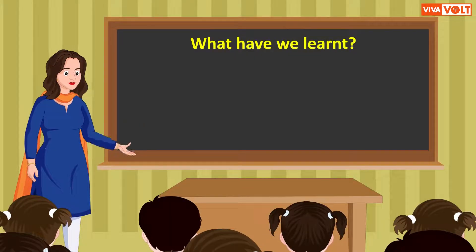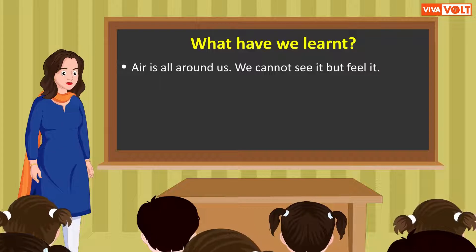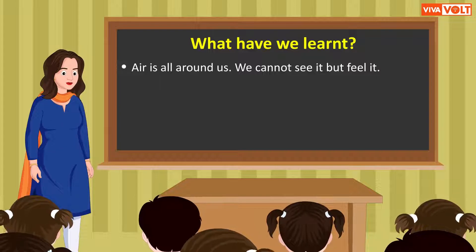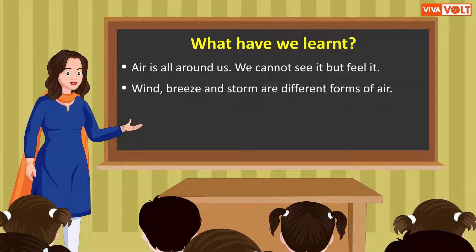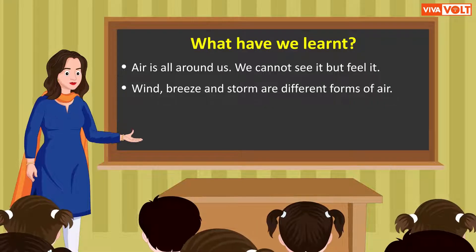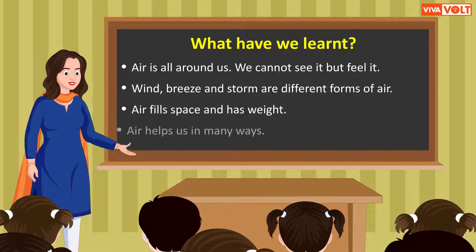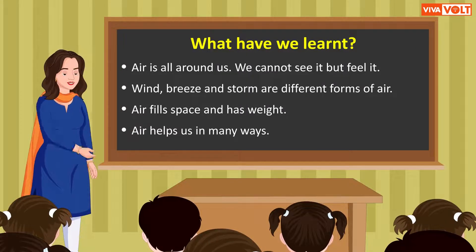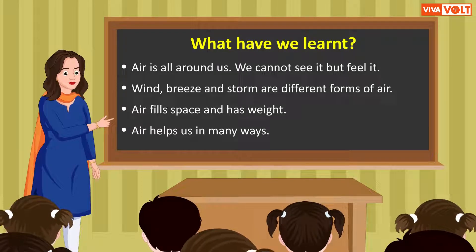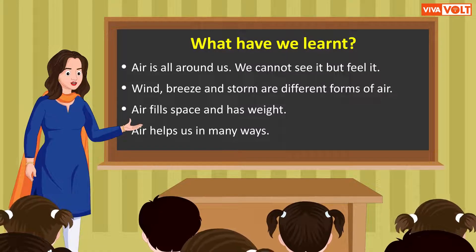What have we learnt? Air is all around us. We cannot see it but feel it. Wind, breeze and storm are different forms of air. Air fills space and has weight. Air helps us in many ways. Children, hope you enjoyed learning the concepts. We will meet soon to learn new things.